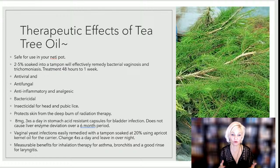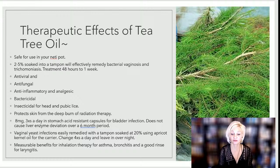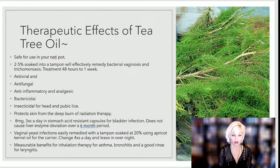Eight milligrams three times a day in a stomach acid-resistant capsule for bladder infection does not cause liver enzyme deviation over a six-month period, so it is a safe long-term treatment for chronic cystitis. For vaginal yeast infections, soak a tampon in 20% tea tree to apricot oil carrier, change the tampon about four times a day, and you can leave it in overnight — this will not cause issues with toxic shock syndrome.